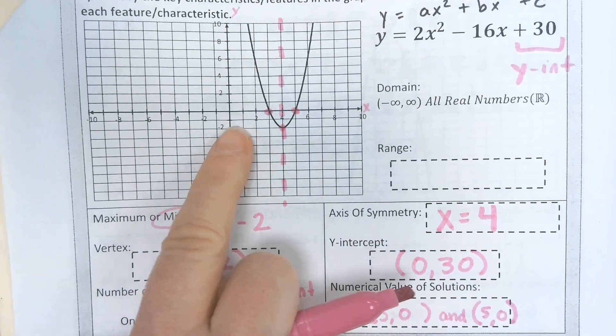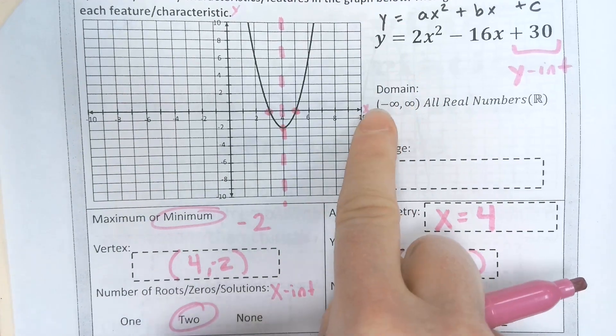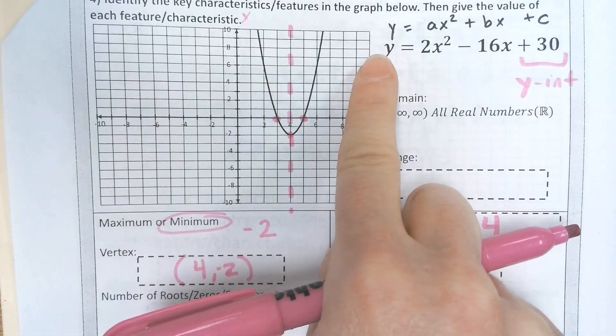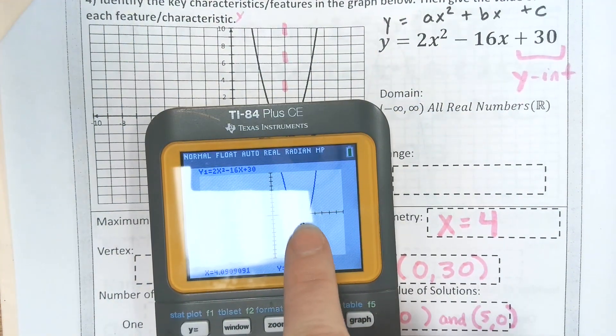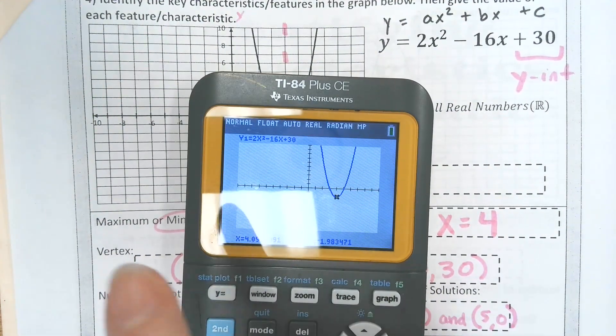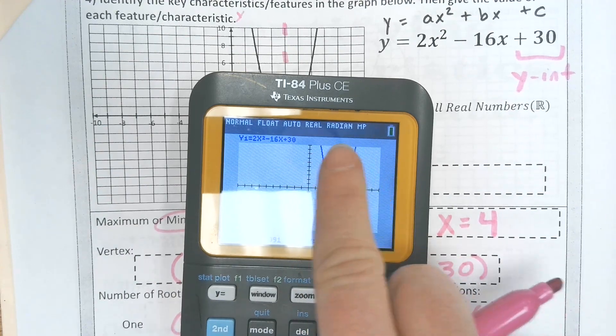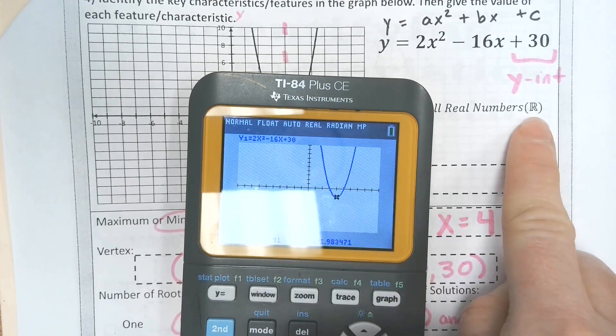Then we need to finish this out. Domain is all real numbers. This goes on and on forever because we're talking about this graph right here. I can only see part of it, but if I were to zoom out I would see more of it. It's not ending right there, so that's why it's all real numbers.